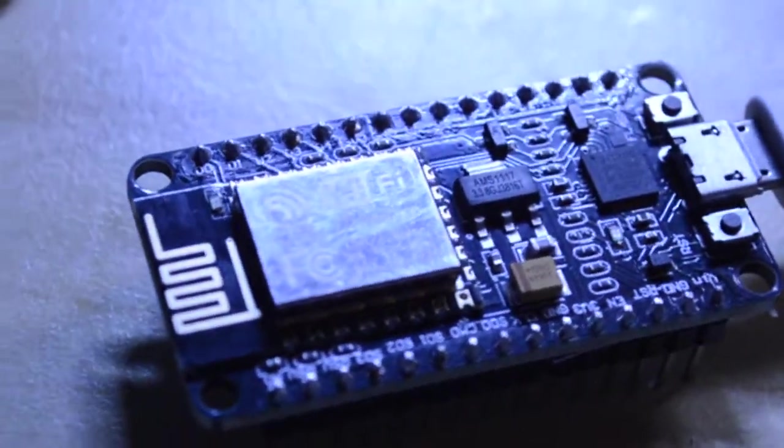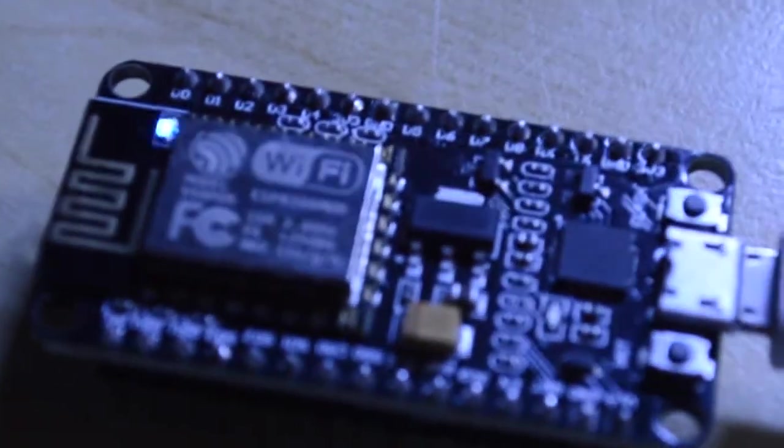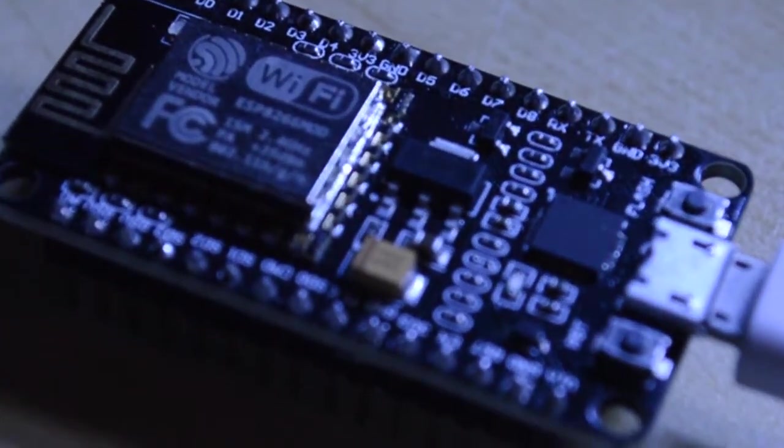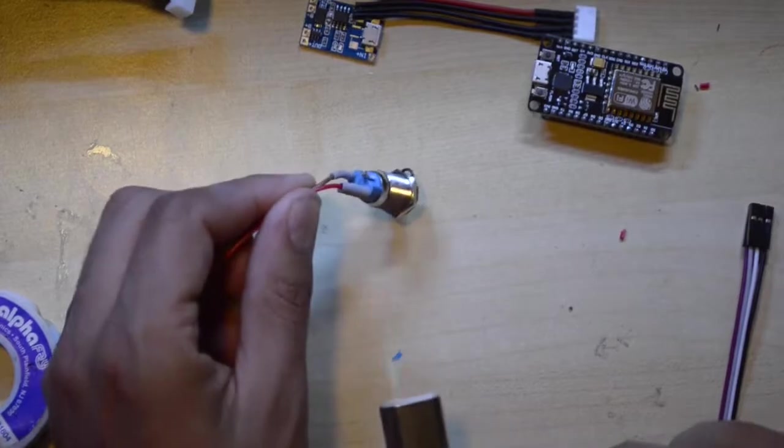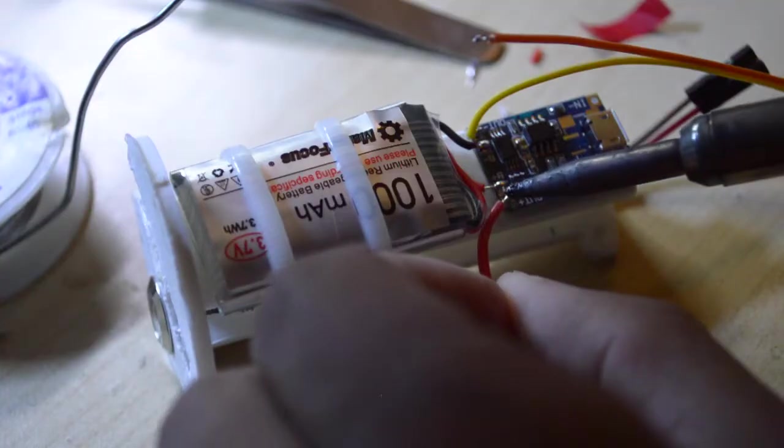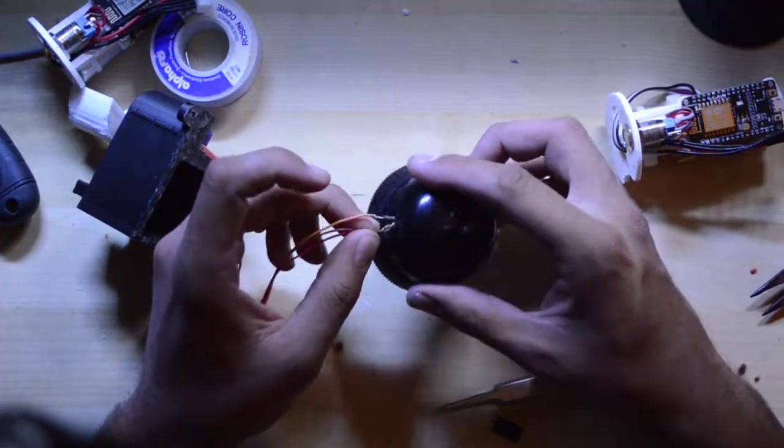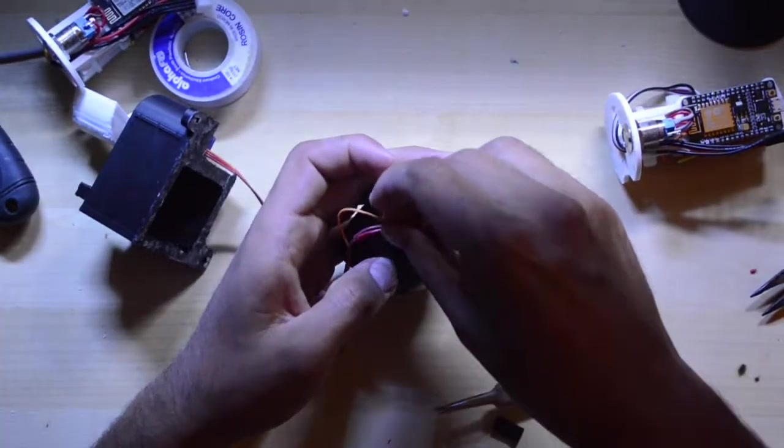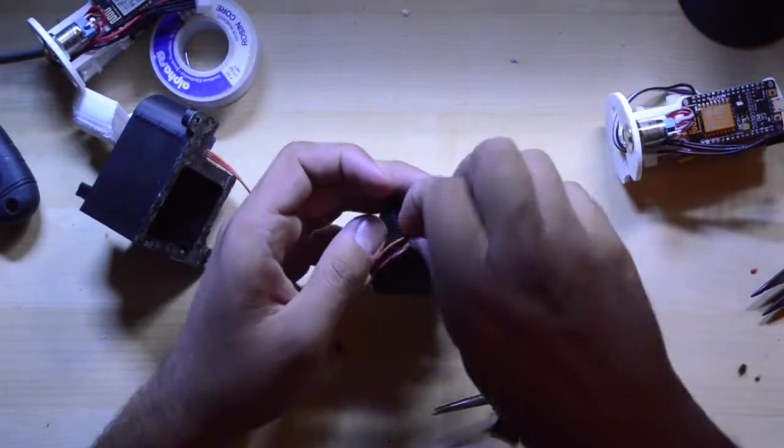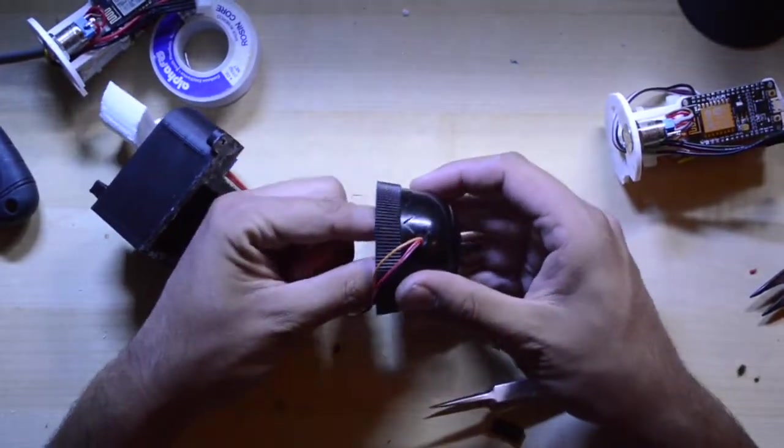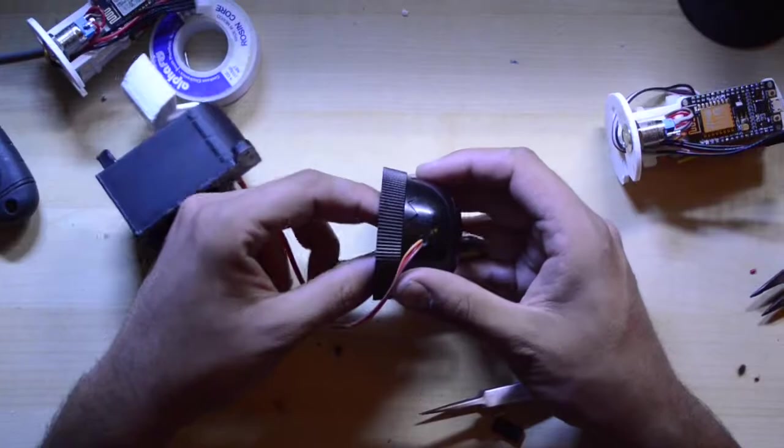The WiFi enabled ESP12E is the perfect part to get us scooping wirelessly. First, I create a power circuit that contains a battery and a micro-USB charger. Now, I drill a small hole in the side of this dry box built by Cressi and feed into it the servo wires from the outside.